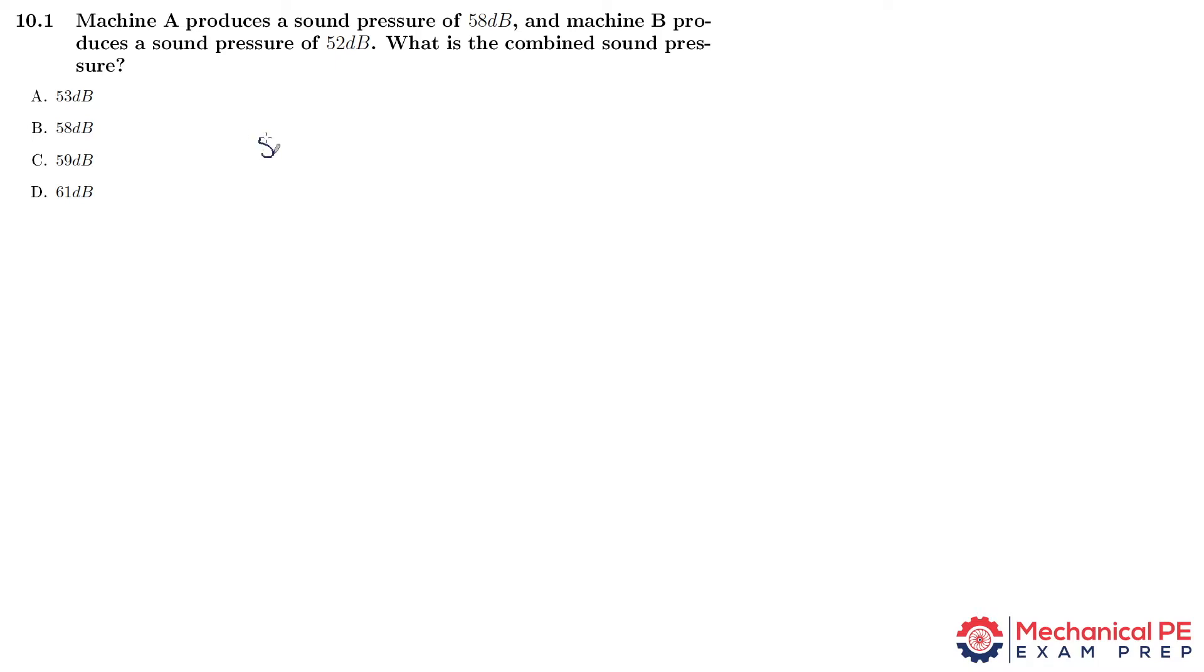This is an acoustics problem with source A producing 58 decibels and source B producing 52 decibels. Technically, to add two sound pressure levels there's a sophisticated formula involving logarithms. It's not too much trouble to use, but it's not available in the reference handbook. You'd have to look in the MERM for that equation, and I think that's a signal that the folks who design these tests are not looking for us to become experts on acoustics.